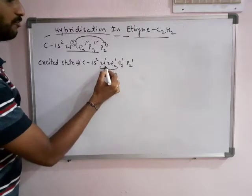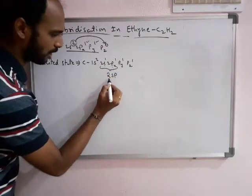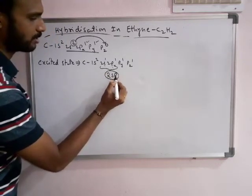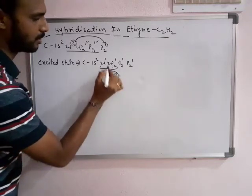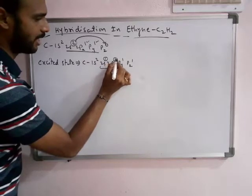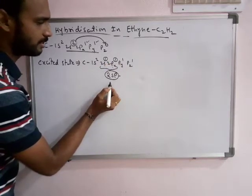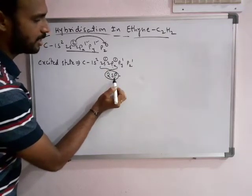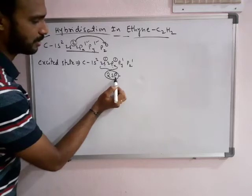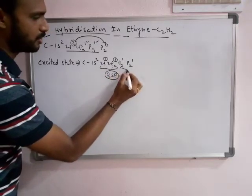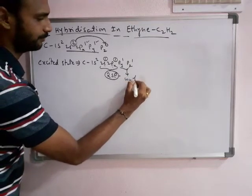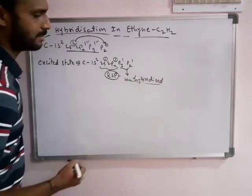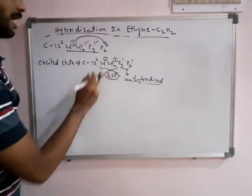With the participation of 1s and 1p orbitals, there is a formation of two hybrid orbitals — two sp hybrid orbitals. These two sp hybrid orbitals have unpaired electrons, because before hybridization they had unpaired electrons. There is no change in the electron arrangement before and after hybridization, so these two sp hybrid orbitals possess unpaired electrons and are treated as unhybridized orbitals.